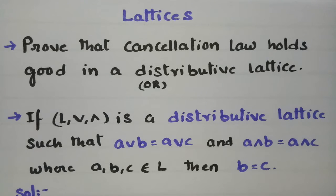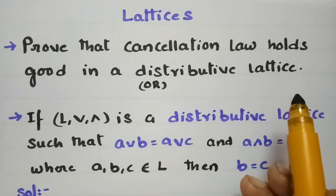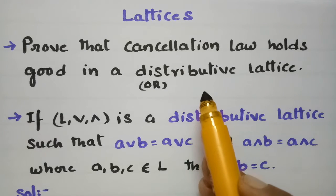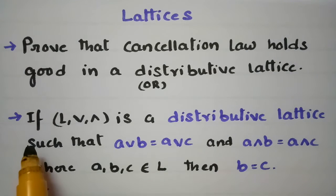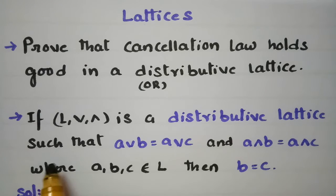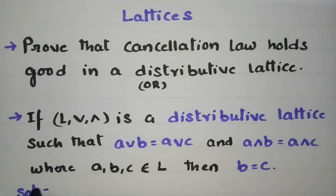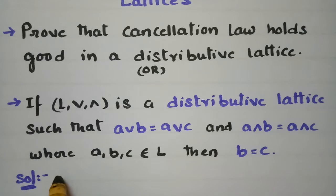In today's video I am going to explain the topic: lattices. The problem is to prove that the cancellation law holds good in a distributive lattice. Given that L with join and meet is a distributive lattice such that a∨b = a∨c and a∧b = a∧c, where a, b, c belong to L, we have to prove that b = c.